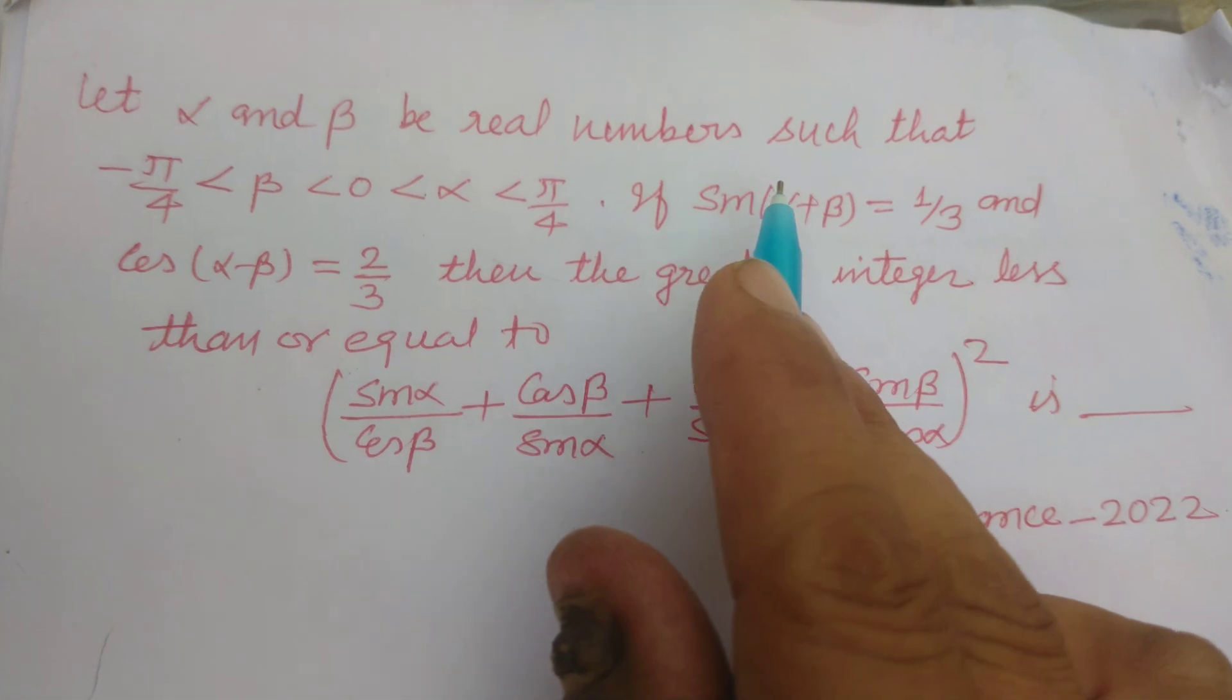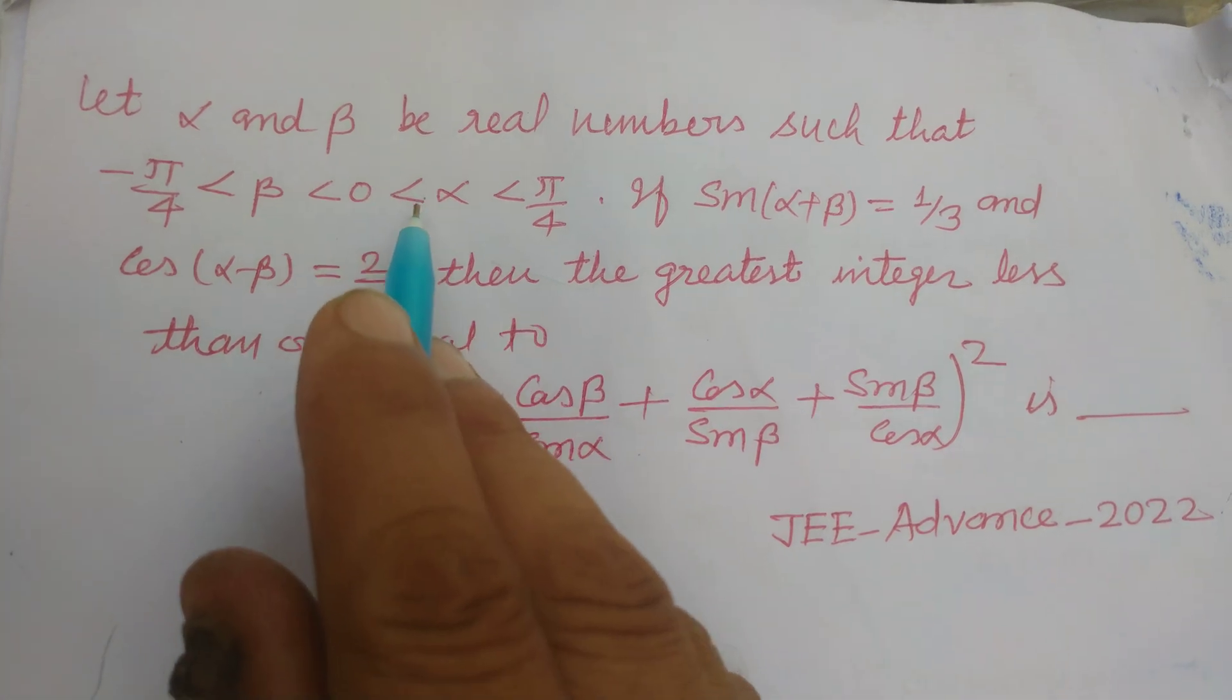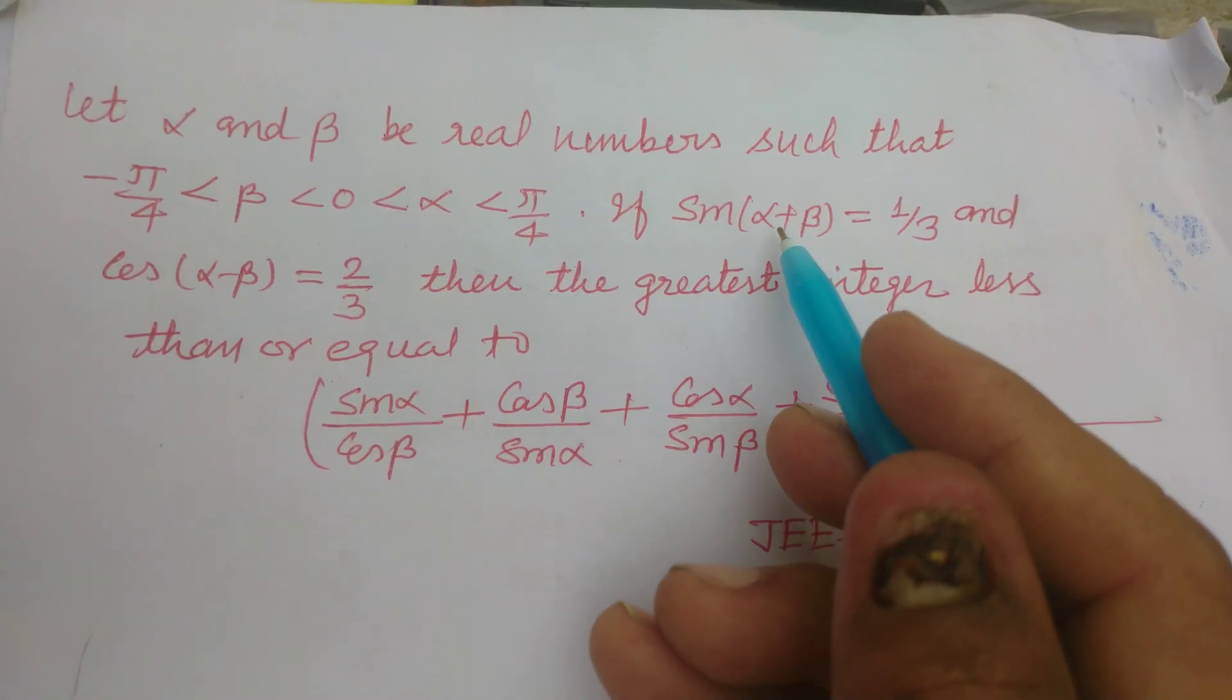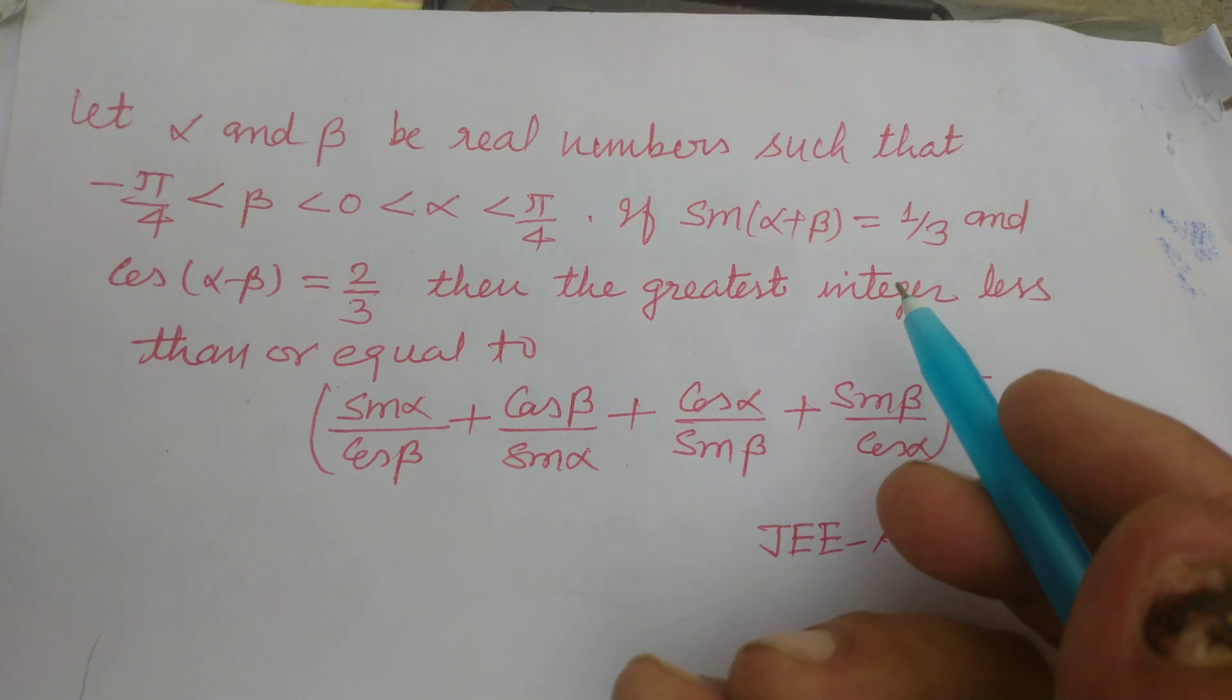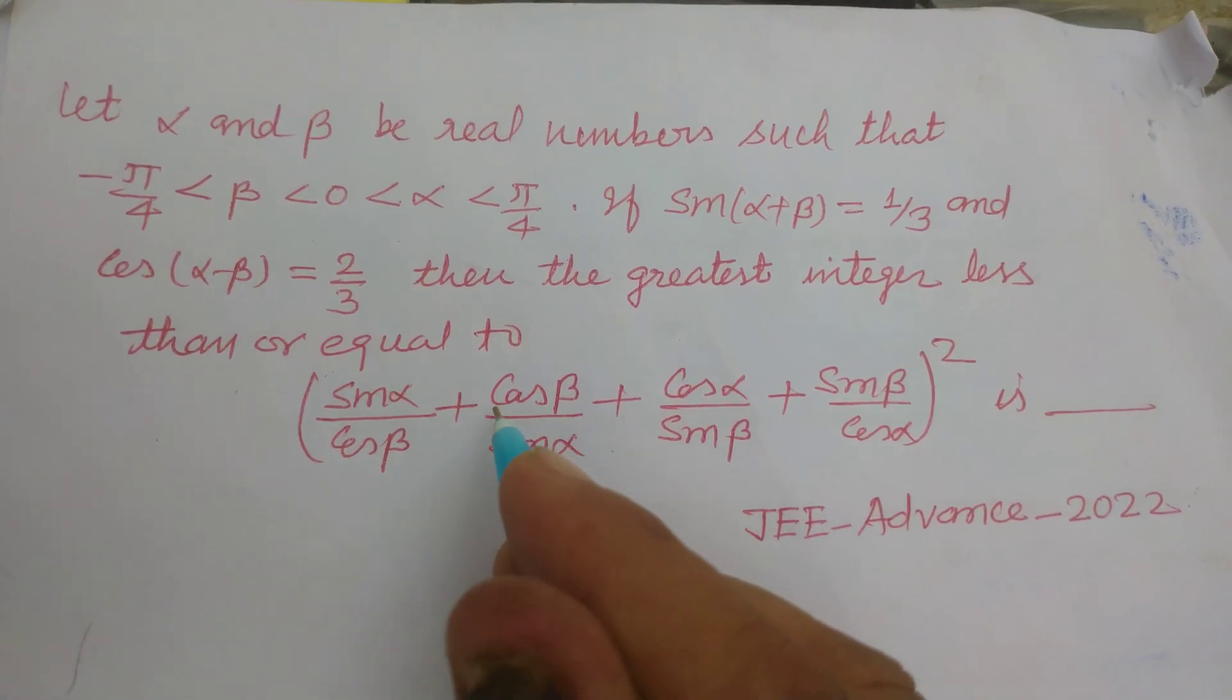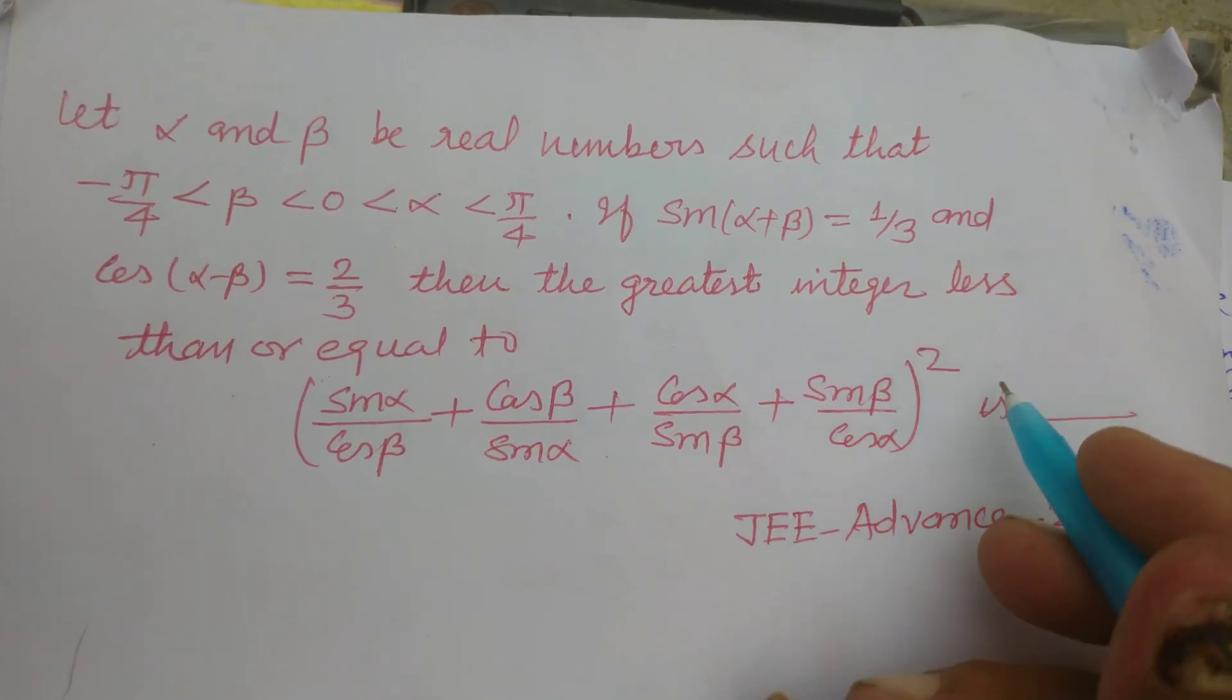Let α and β be real numbers such that -π/4 < β < 0 < α < π/4. If sin(α+β) = 1/3 and cos(α-β) = 2/3, then the greatest integer less than or equal to [sin α/cos β + cos β/sin α + cos α/sin β + sin β/cos α]² is.